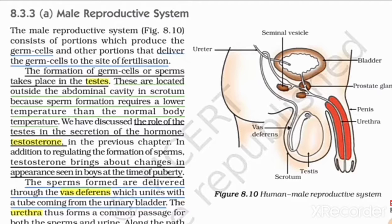The role of the testes in the secretion of the hormone testosterone: the testes secrete the hormone known as testosterone. When testosterone is formed, changes start occurring in the male reproductive organs. Testosterone brings about changes in appearance and voice at the time of puberty.